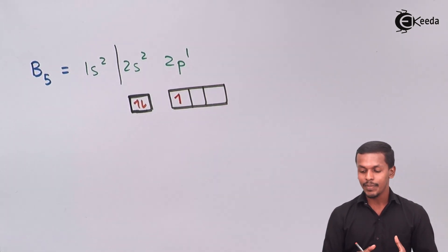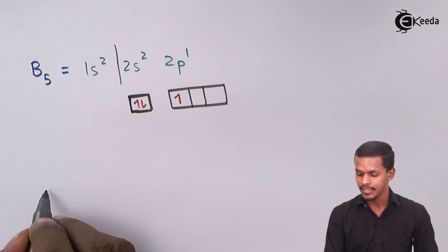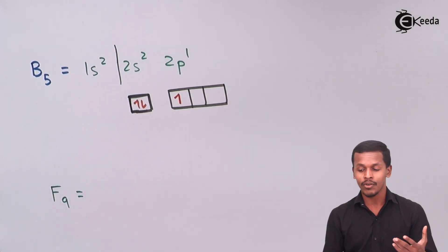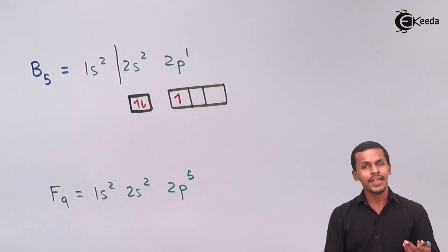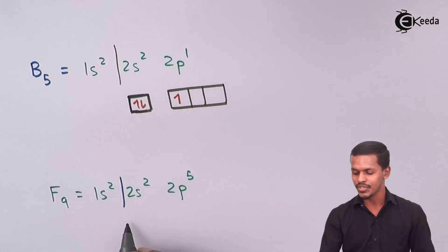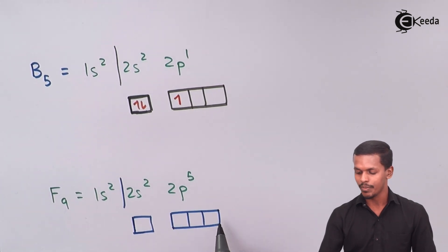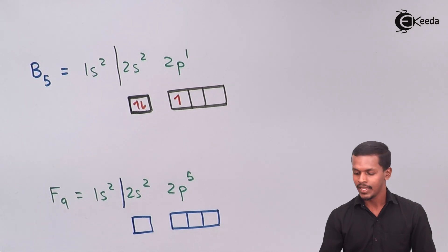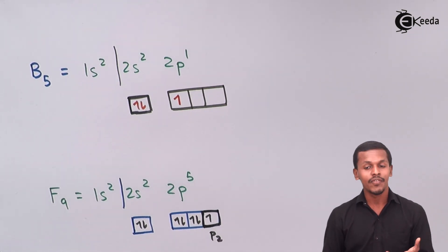We need three fluorine atoms to form BF3, or boron trifluoride. Fluorine has an electronic configuration of 1s2, 2s2, and 2p5. The outermost shell of fluorine consists of one s orbital and three p orbitals — two electrons in s and five electrons in the p orbitals. This gives us one unpaired electron in the pz orbital of the fluorine atom.